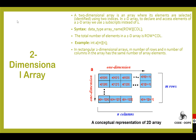In a 2D array, we use two subscripts instead of one subscript. The syntax for declaring a 2D array is: data type, array name, where the first subscript is for row size and the second subscript is for column size. The total number of elements in a 2D array is rows multiplied by columns.